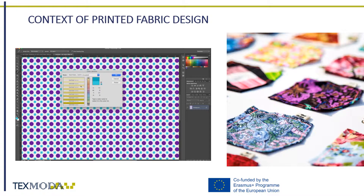These events normally occur twice a year during textile and apparel fairs, where forecast reports are presented to industry professionals. One of the most well-known fairs in Europe is Première Vision, which occurs in February and September in Paris.